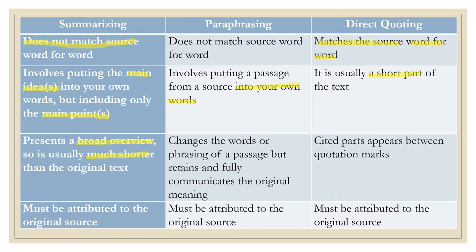In summarizing, you usually present a broad overview and it is usually much shorter than the original text. In paraphrasing, you usually change the words or even the phrases in the passage, but the meaning of the text still retains. In direct quoting, the cited part appears between quotation marks. In summarizing, paraphrasing, and direct quoting, all of them must be attributed to the original source — you will be mentioning the author of the text.